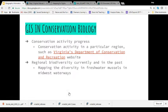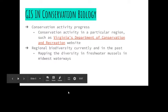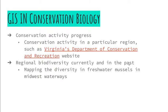Another way GIS is used is to look at regional biodiversity currently and in the past. For example, since I'm interested in freshwater mussel populations in Midwest waterways, it would be incredible to create a GIS map to show those things.